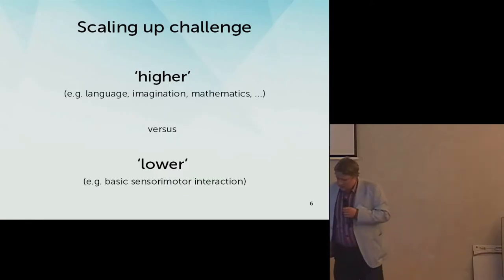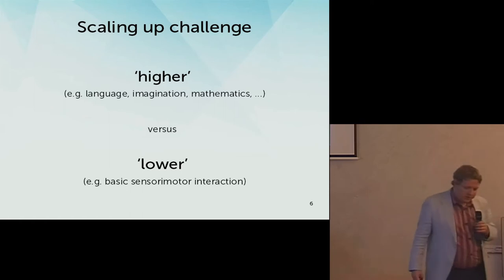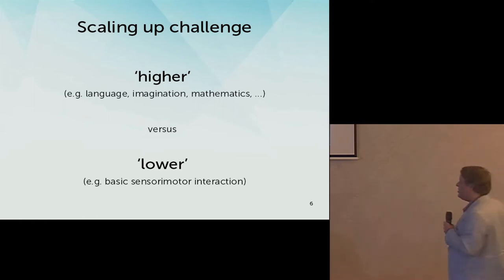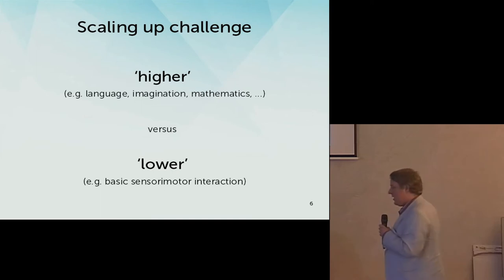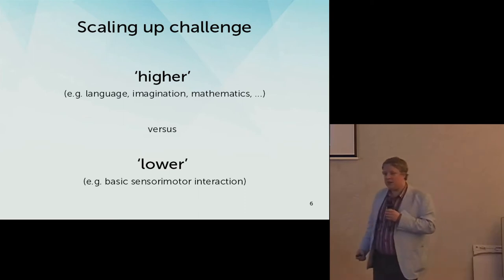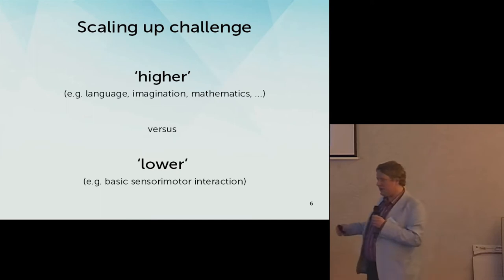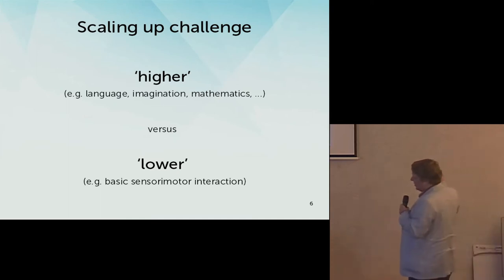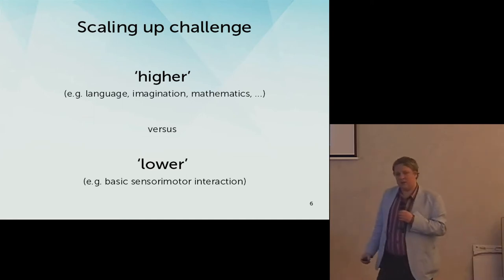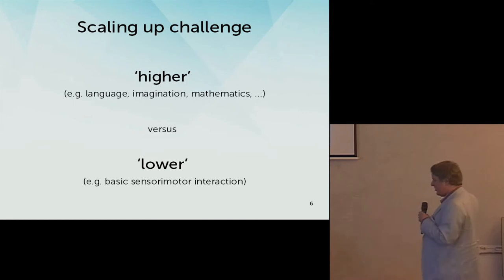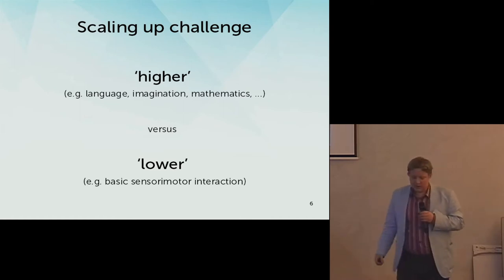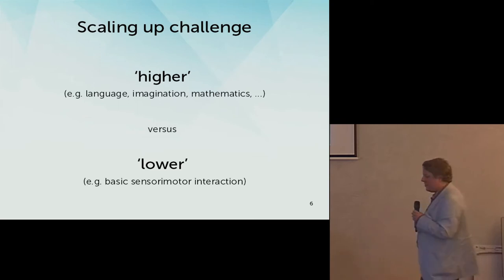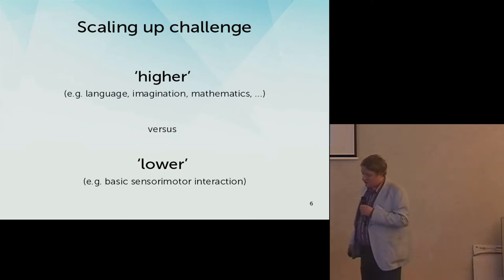One of the key motivations for the project we're currently doing is what is known as the scaling up challenge. People have learned about these affordances and embodied skills, and one reaction you get quite often is: well, this might be very interesting for basic or lower cognitive skills, basic sensory-motor interactions with the environment, but once you get to the higher cognitive skills, you're going to need a lot more — you're going to once more need your representations and all the things that you don't want to use. So in this paper, we try to see whether we can extend this concept of situated normativity to, in this case, language.